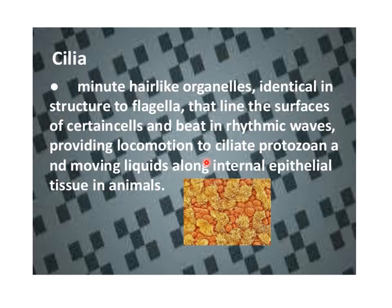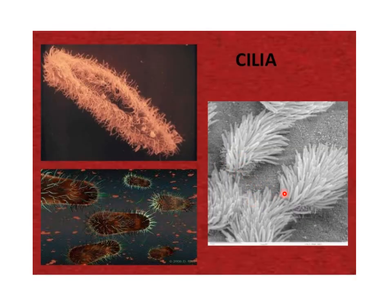Cilia are minute hair-like organelles, identical in structure to flagella. They line the surfaces of certain cells and beat in a rhythmic wave-like fashion, providing locomotion to protozoa and moving liquids along internal epithelial tissues in animals. In humans, cilia are very important as they line the epithelia of the respiratory tract and also the uterine tubes. They beat in a rhythmic fashion to spread mucus in the respiratory tract and to entrap dust particles and foreign particles, playing a very important role in the human body.